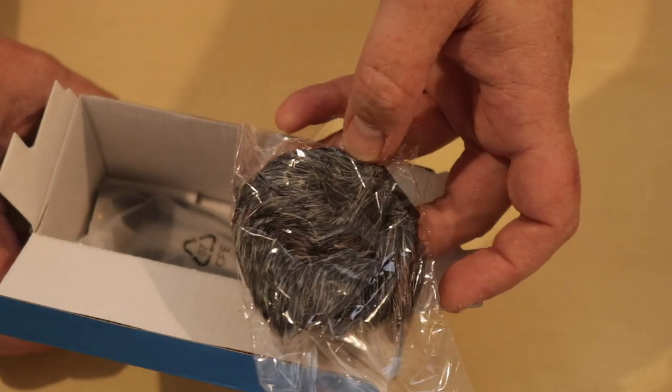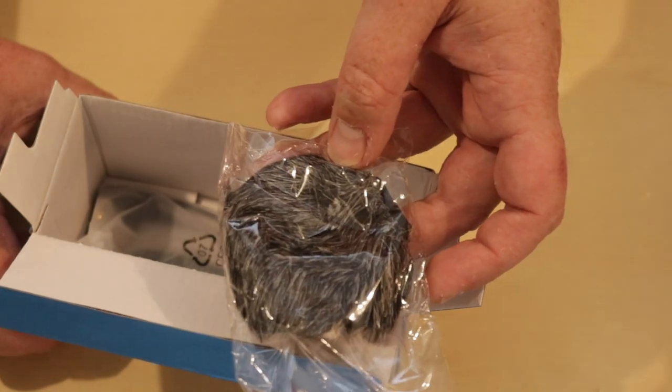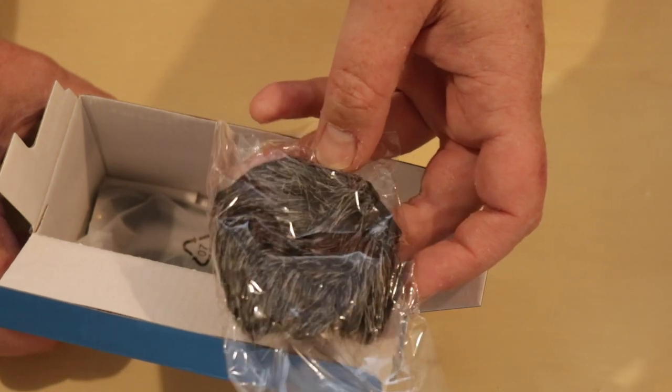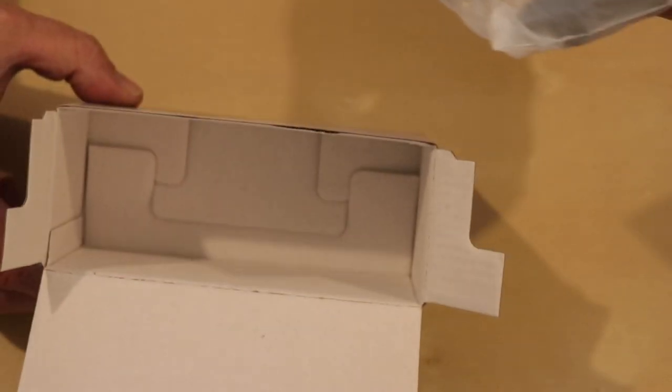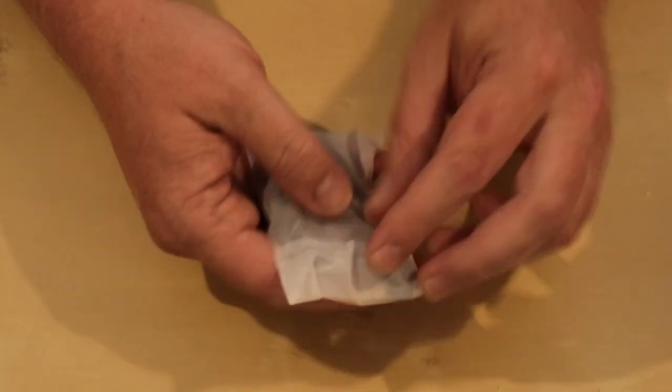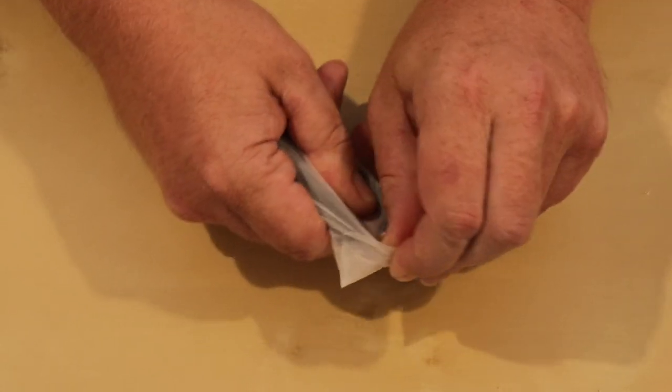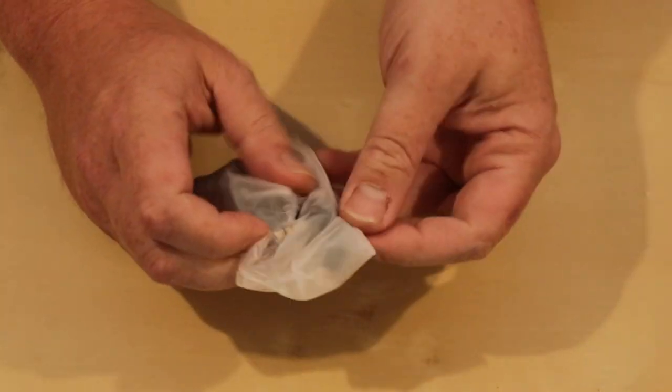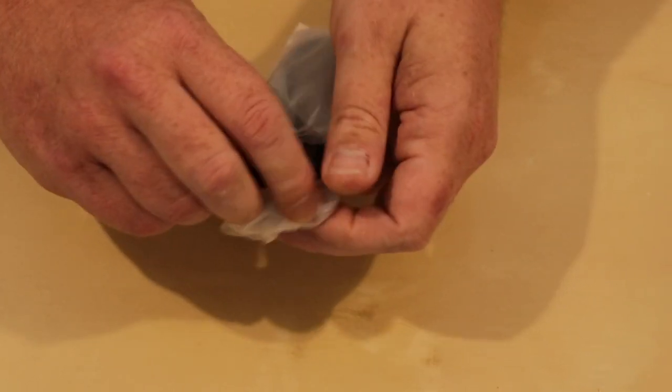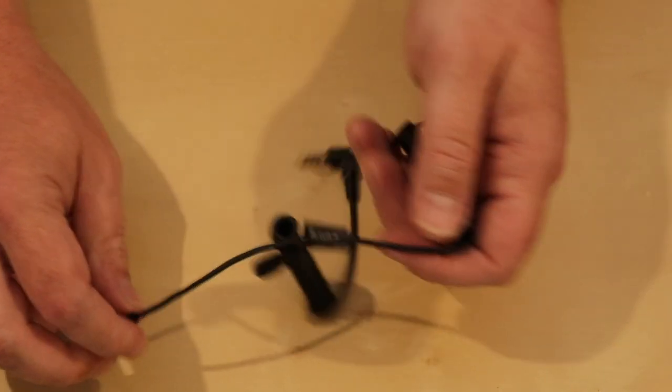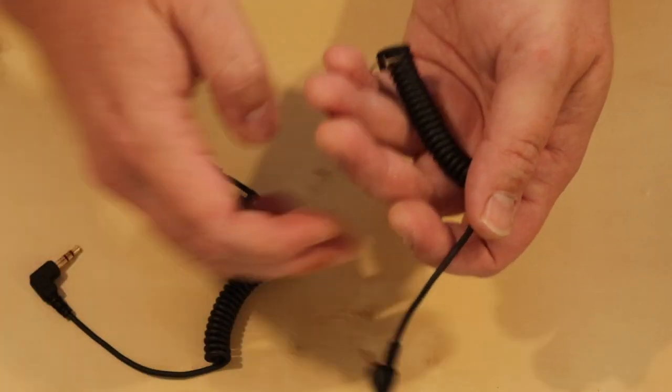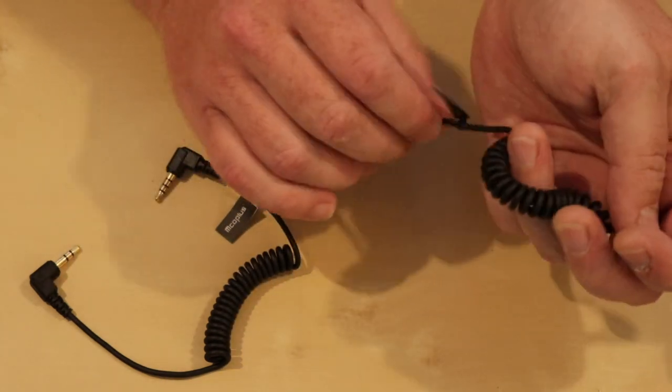Next we have a furry windmuff for slightly windier conditions. And that's it for what's in the box. Finally we do have a bag with some cables in it, so let's open this up and have a look. In this bag we are presented with two cables. They are both labelled.